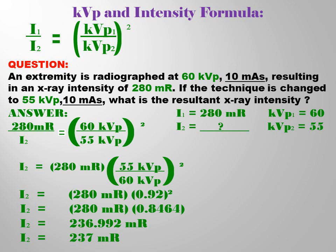Then we have solutions here. First, multiply or simplify the following: 280 mR multiplied by 55 KVP over 60 KVP squared.